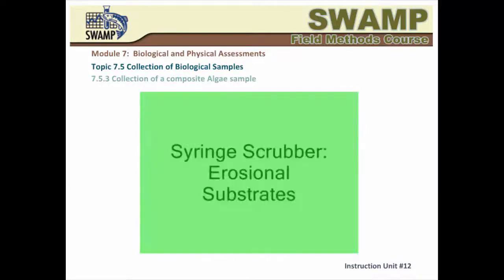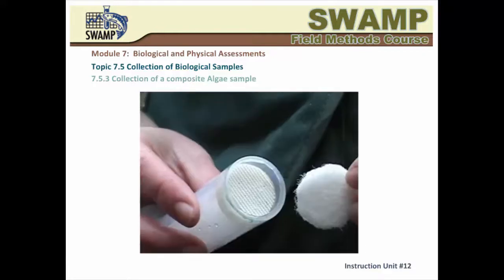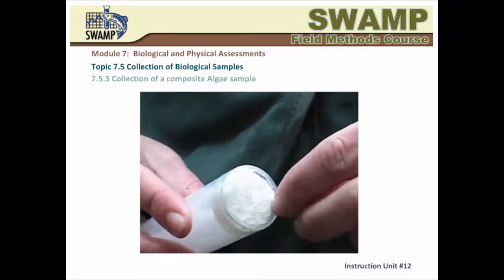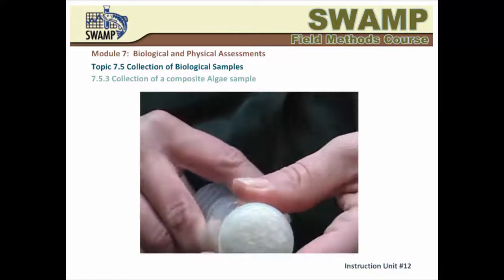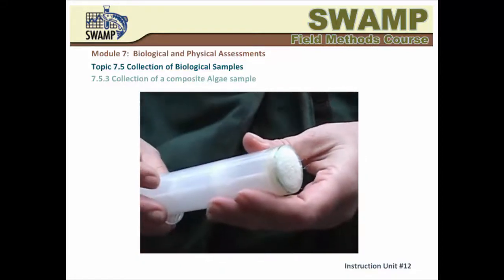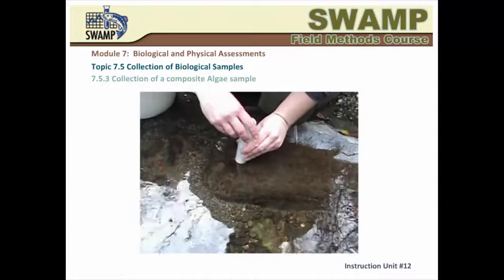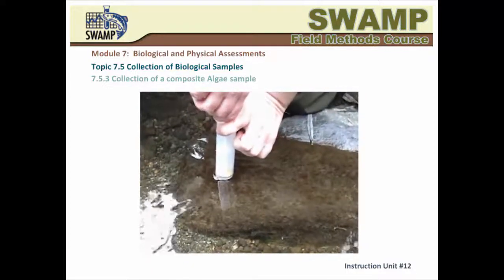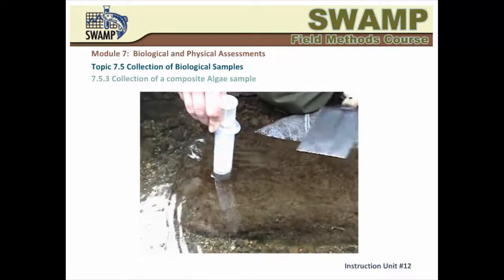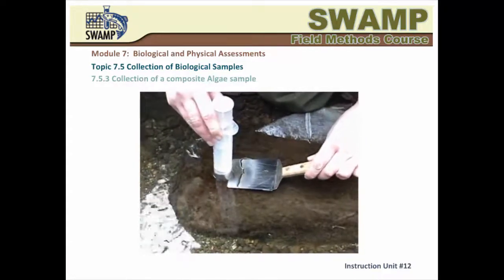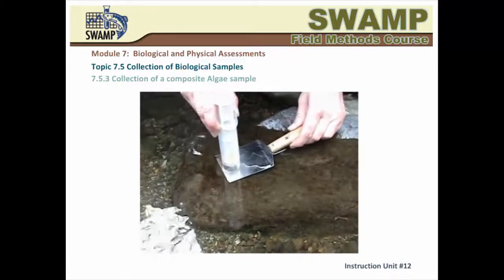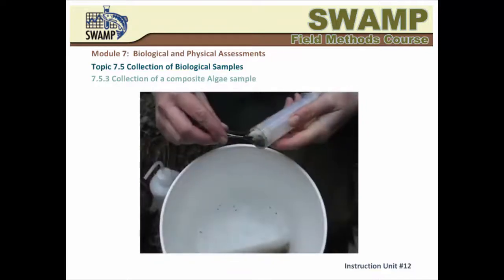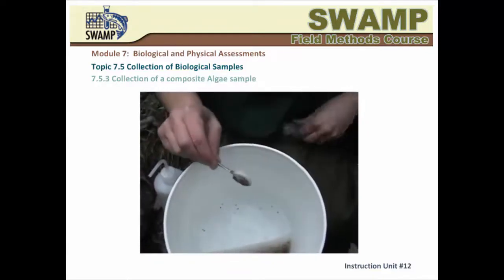Once you are done collecting a subsample, you cover the bucket to protect the algae from the sun and move upstream to the next transect. If the substrate particle at your sampling point is bedrock, a large boulder, or part of a concrete channel, you will use a syringe scrubber to collect that subsample. You prepare the scrubber by attaching a fresh white scrubbing pad to the velcro surface at the end of the plunger and pushing it flush with the bottom of the barrel. You press the scrubber firmly to the substrate, rotate it three times, retract the pad a couple of millimeters, insert the spatula underneath the barrel, lift both up, and release the content into the bucket.